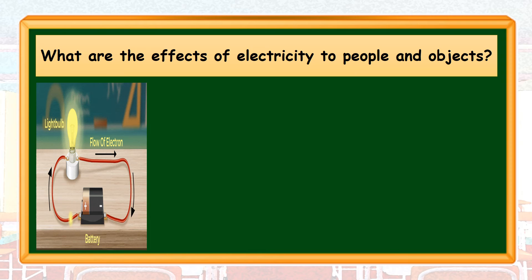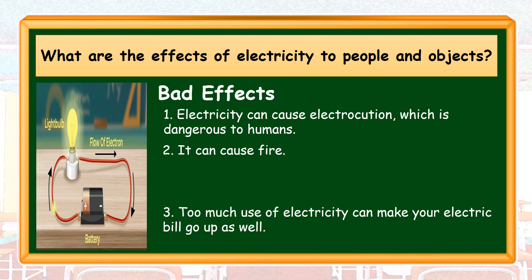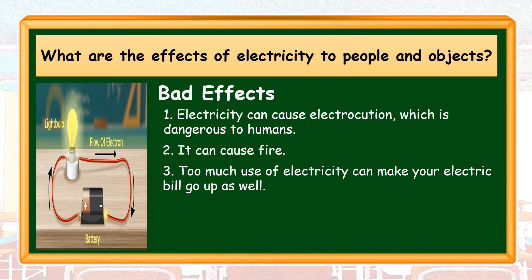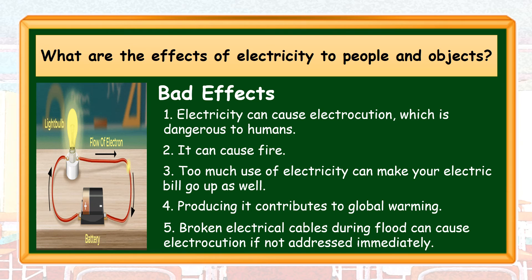On the other hand, here are some bad effects of electricity. Number 1, electricity can cause electrocution, which is dangerous to us humans. Number 2, it can cause fire. Number 3, too much use of electricity can make your electric bill go up. Number 4, producing it contributes to global warming. And number 5, broken electrical cables during a flood can cause electrocution if not addressed immediately.